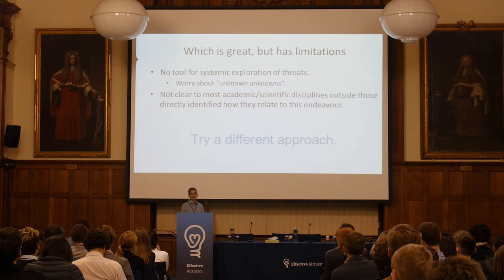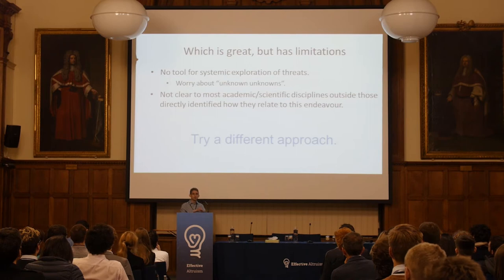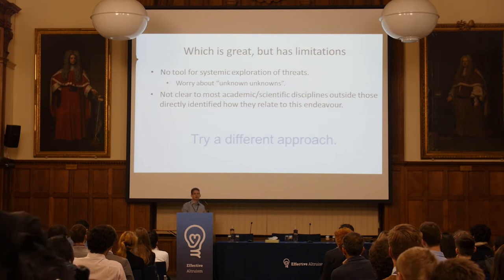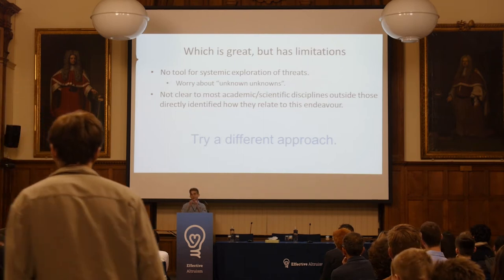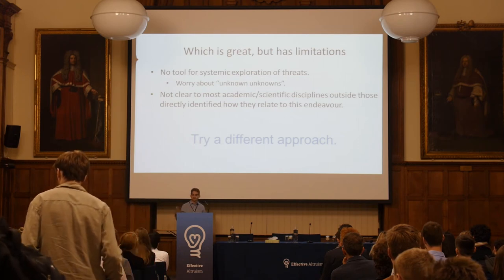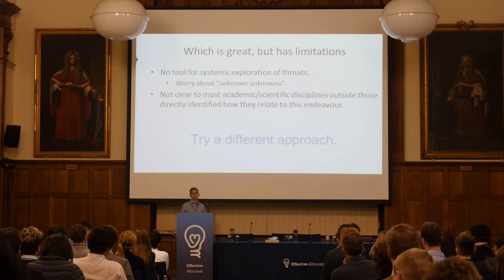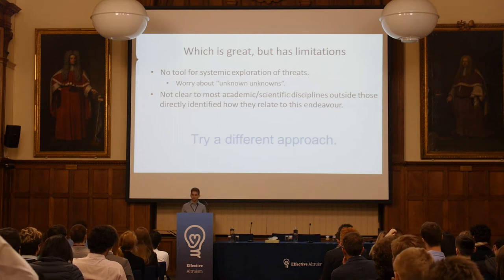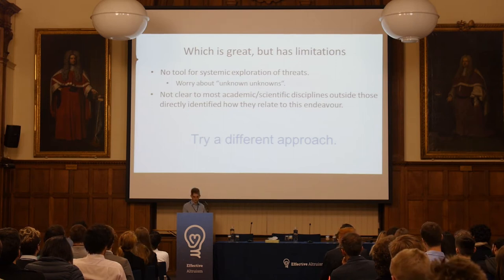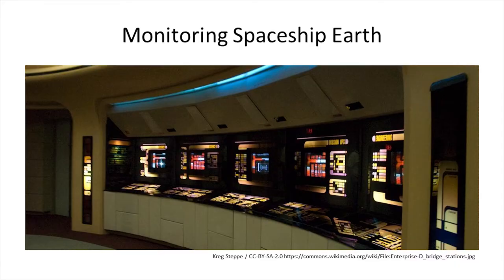Another limitation is that if you start from particular, fairly siloed scenarios, you're not reaching out to academia as a whole. You're reaching out to people in astronomy, people in pandemic prevention, while there might be a lot of relevant academic intellectual work on these problems elsewhere in academia. So we put together a slightly different classification method that attempts to look at the same problem.